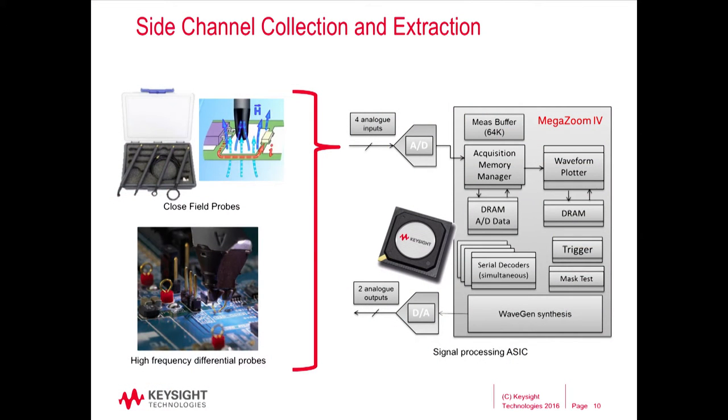We're going to use the oscilloscope to do side channel collection and extraction. There are a number of techniques: close-field probes for electromagnetic signals, which look for the electromagnetic field around the signal; or high-speed differential probes — the technique we'll use today — where you get right in beside the components of interest. A low-noise amplifier sits right behind that with a bandwidth of around 2 GHz, letting us see very subtle signals. Beyond that, we use signal processing techniques: decimating, averaging, and summating the signal; accurate triggers to capture the signal of interest; and Fourier transforms. Once we've got the signal, we can tweak it and shoot it back out to do full replay attacks.